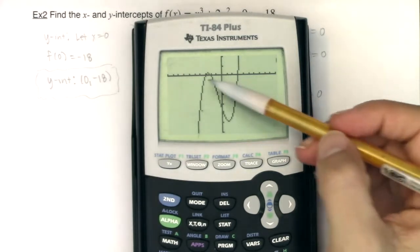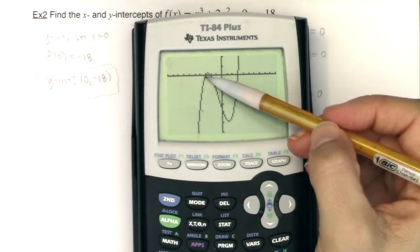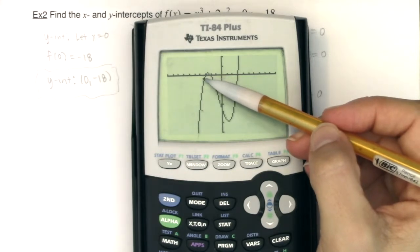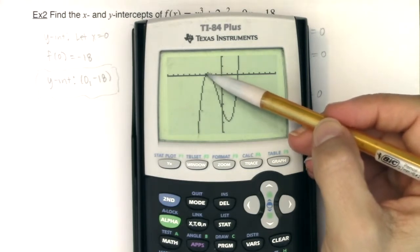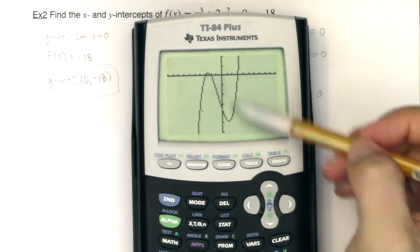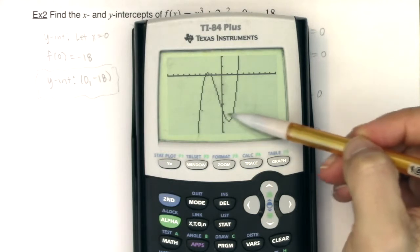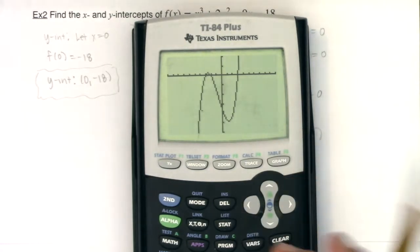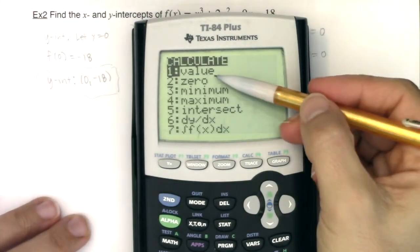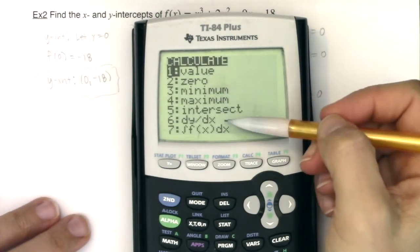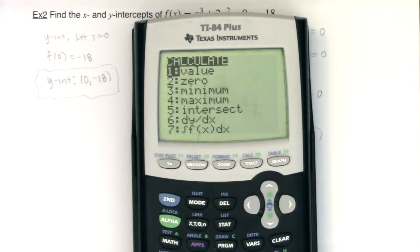So there's my zero at -3, -2 and 3. There's my y intercept at (0, -18). I have some kind of maximum point here that I could go locate, and I also have a minimum point over here that I could go locate with my calculator. Don't forget that second and trace button. It gives you all sorts of information about your function. And we'll be using that as we move forward and we start trying to graph out all of these polynomials.